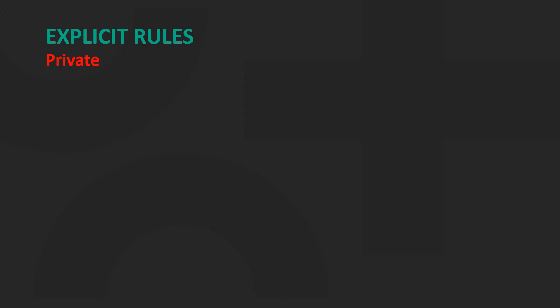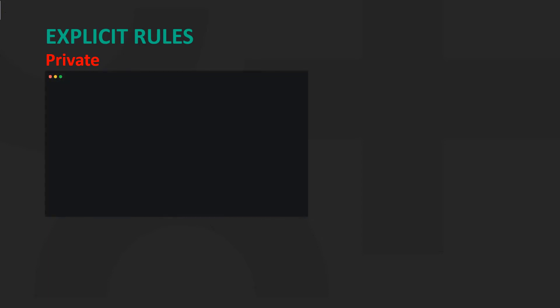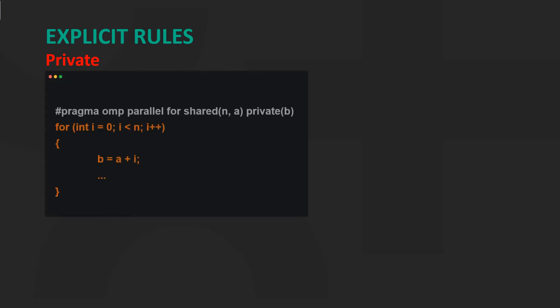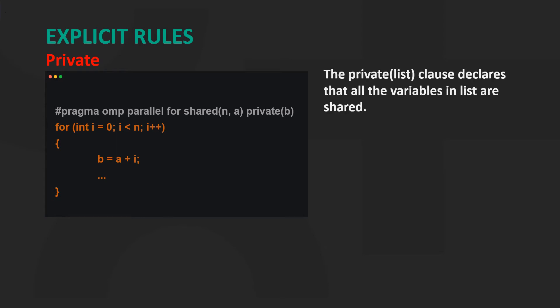The private list clause declares that all variables in a list are private. Here, b is a private variable. When a variable is declared private, OpenMP replicates this variable and assigns its local copy to each thread.